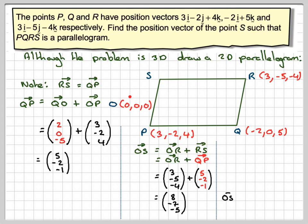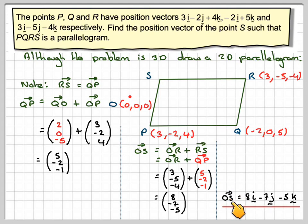Finally, writing it out in the original format: OS equals 8i minus 7j minus 5k.